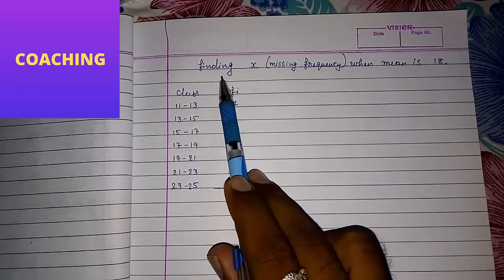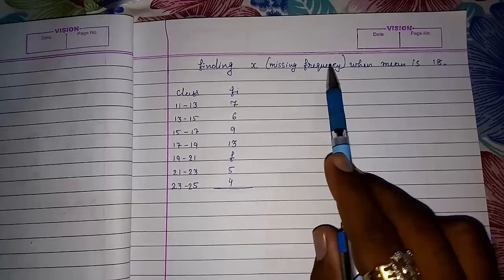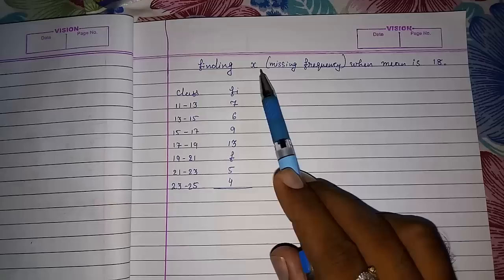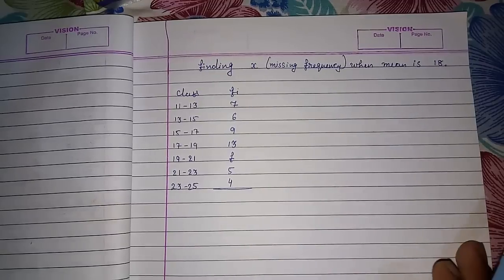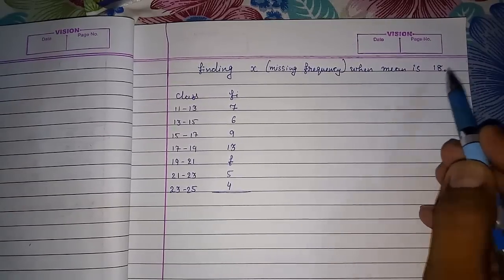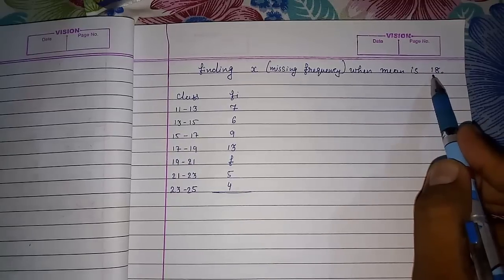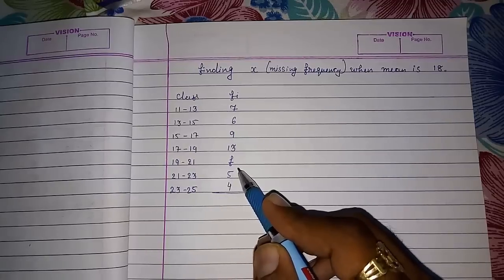Hello friends, today we are going to find X, or you can say F, for the missing frequency when mean is given to you. In my previous video, I told you finding X and Y when median is given to you. So here you can see mean is 18 given to us. At that time only we can find this. Either they will give you mean or median or mode, at that time only we can find the unknown frequency.